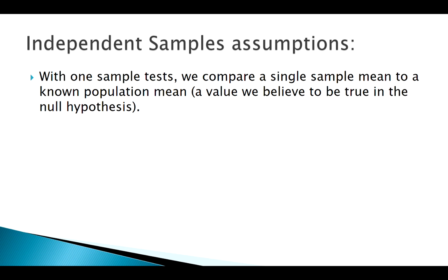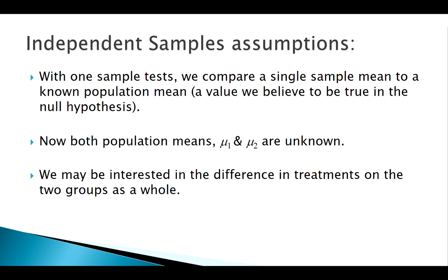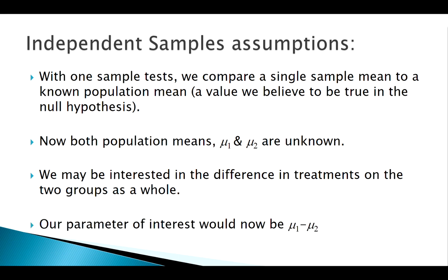All those ideas — the Central Limit Theorem, the t-distribution — still apply, but now we apply them times two. We have two samples, each potentially from different populations, with their own population means and population standard deviations. We're going to look at the difference between the groups, so our parameter of interest is mu₁ minus mu₂. Previously we used x̄ to estimate mu; now we'll use x̄₁ minus x̄₂.